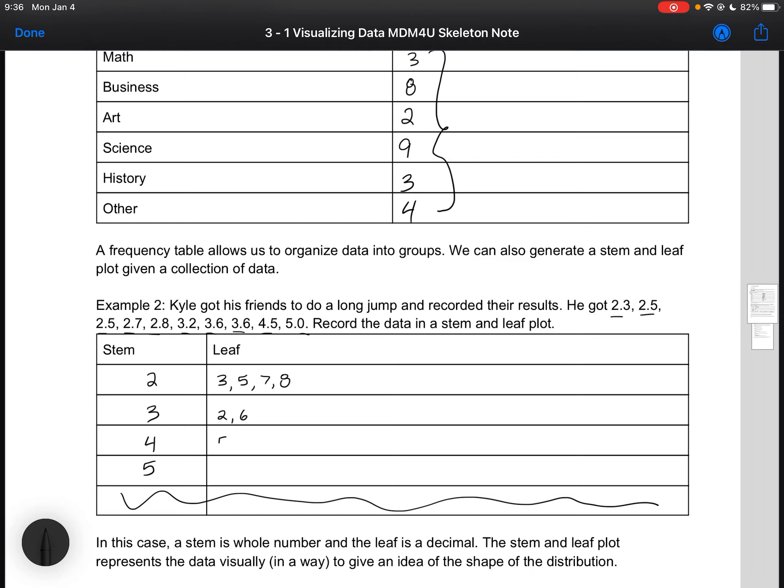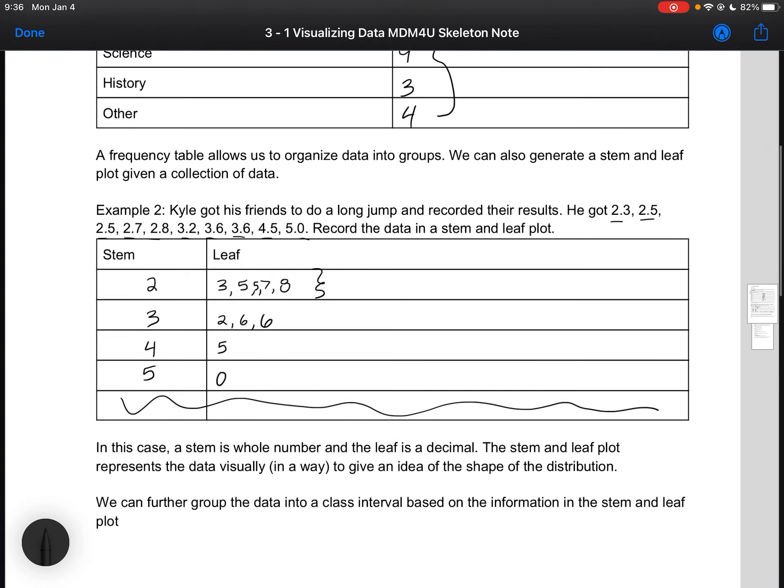And then here for 4 I've got 5 and 0, and I've got another 5 in here and then another 6. So that represents all my data points. What I can see is that if I were to record my results in a bar graph, I've got the most people that are in that stem of 2.